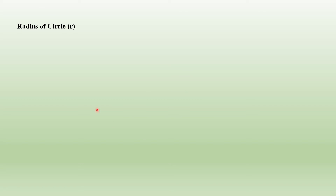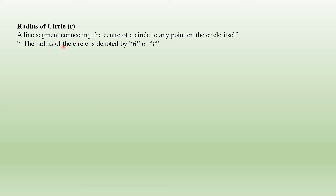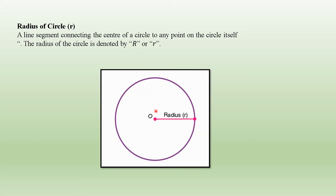Let us start with the basic definition of the radius of a circle. The radius is usually denoted by the small letter r. A line segment connecting the center of a circle to any point on the circle itself is called the radius. It is sometimes also denoted by the capital letter R. So as the definition says, it is the line joining the center of the circle to any point on the circle, and in this figure, OR is the radius of the circle.